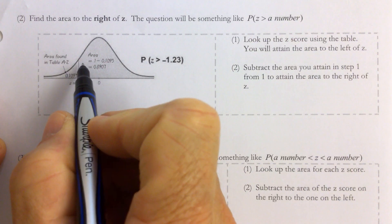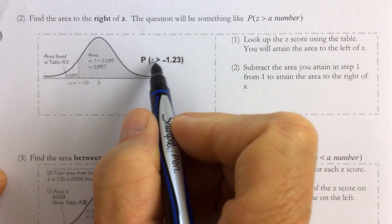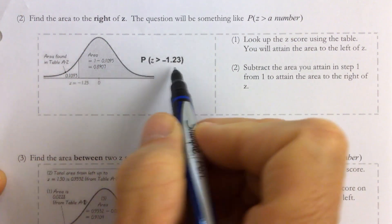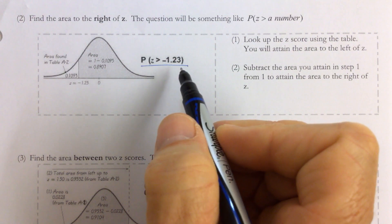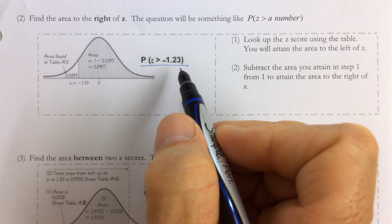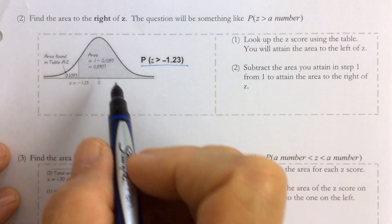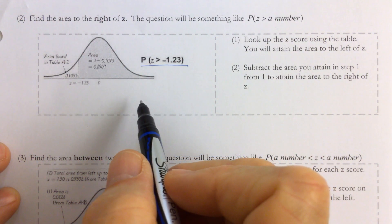So if we want to find the area to the right of a z-score, that's different than finding the area to the left. The one thing to keep in mind is the total area under the curve is equal to 1.